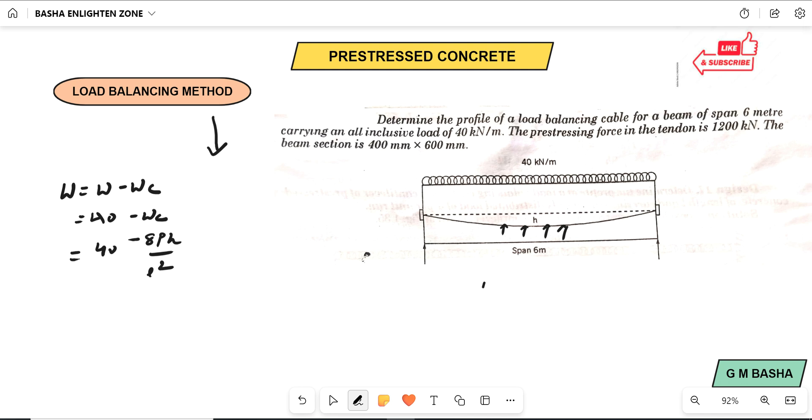That one will be equal to WC equal to W. That is, WC will be equal to 40. Exactly neutralize the upward externally applied loading, which is called load balancing method.